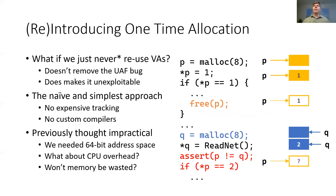The simplest and most obvious UAF countermeasure is the one-time allocation principle. During a program's lifetime, no previously freed virtual address range should be reused for a new allocation. While this allocation policy cannot eliminate the bug in the application, it does make it impossible to exploit by the attacker. Here we see the same code fragment as before, but this time the allocator does not reassign Q to the same address as P. The program is still in error dereferencing P, but the results are no longer attacker controlled.